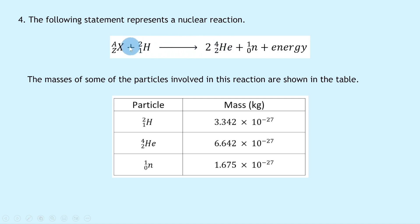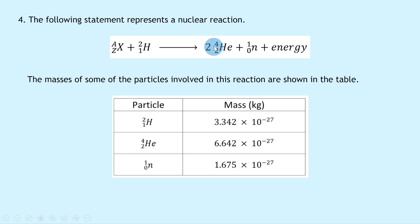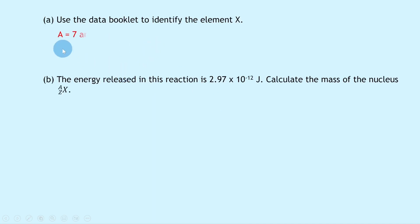Part a says to use the data booklet to identify element X. Using conservation of mass number and atomic number: on the right-hand side we have two alpha particles (He-4-2) plus a neutron, so the total mass number is 2×4 + 1 = 9, and the total atomic number is 2×2 + 0 = 4. So for X: mass number A = 9 − 2 = 7, and atomic number Z = 4 − 1 = 3.